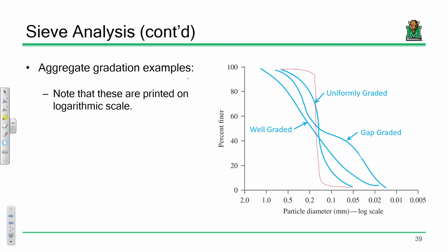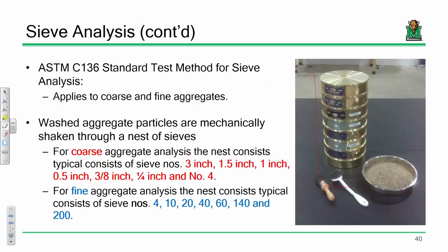A gap-graded aggregate is one where you have a bunch of big particles and a bunch of small particles, but not much in between.